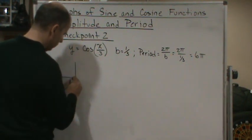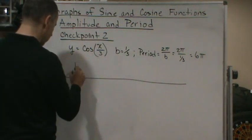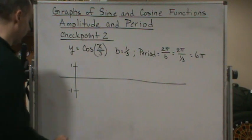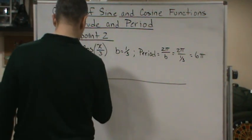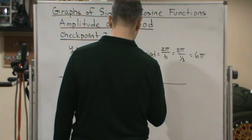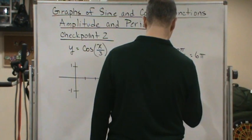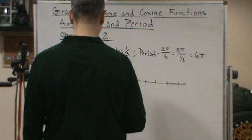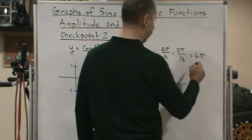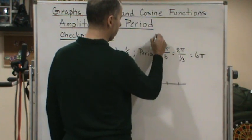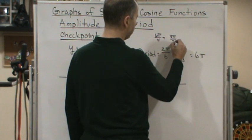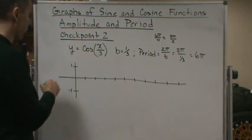Now let's graph it out. It's going to bounce up and down between one and negative one just like before. Now I'm going to do equal spacing. If we divide this by four, 6π divided by four is going to equal 3π over two. So every 3π over two is going to be a point. It's cosine, so cosine starts at the top here.